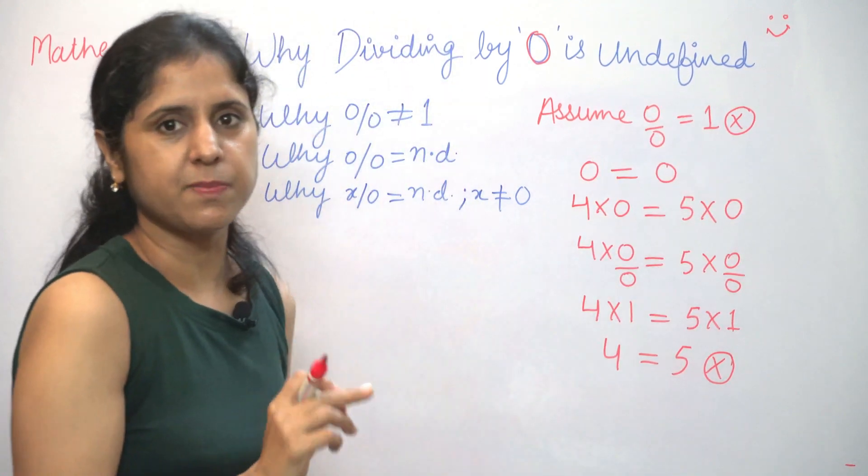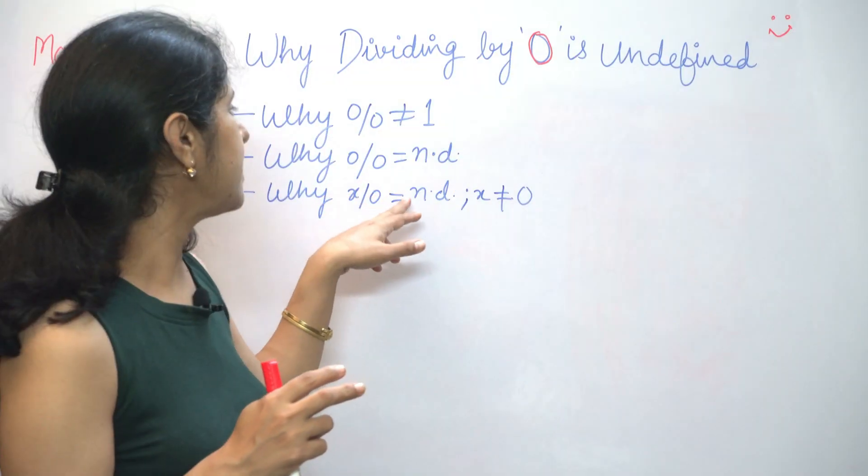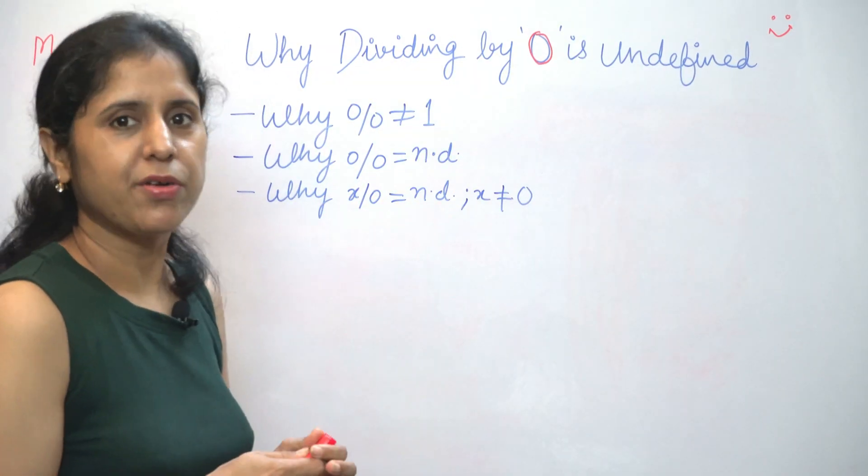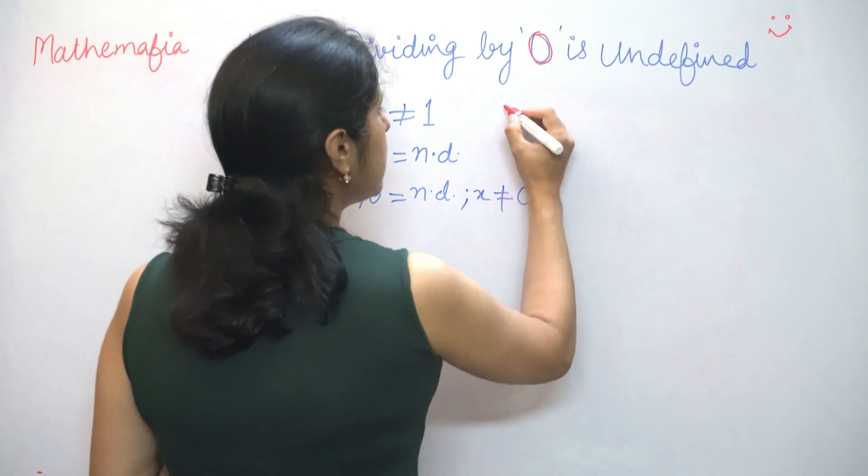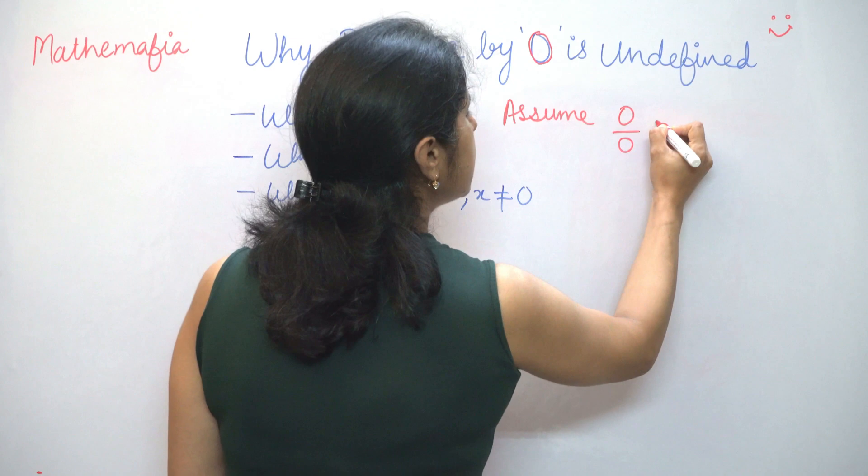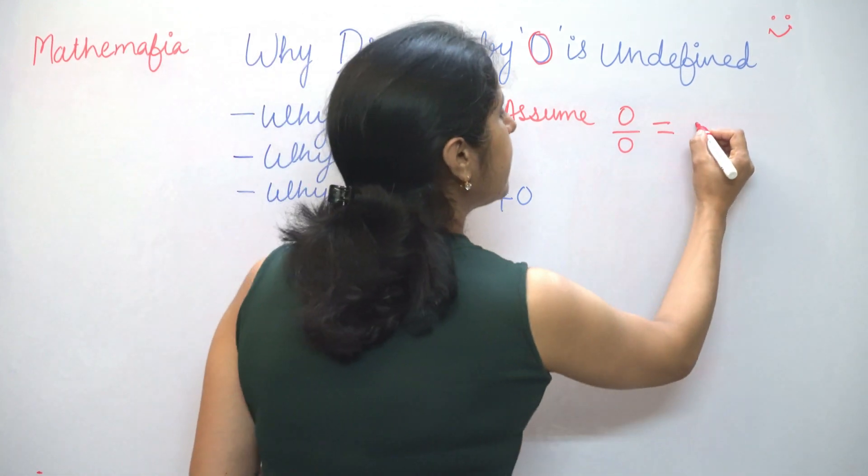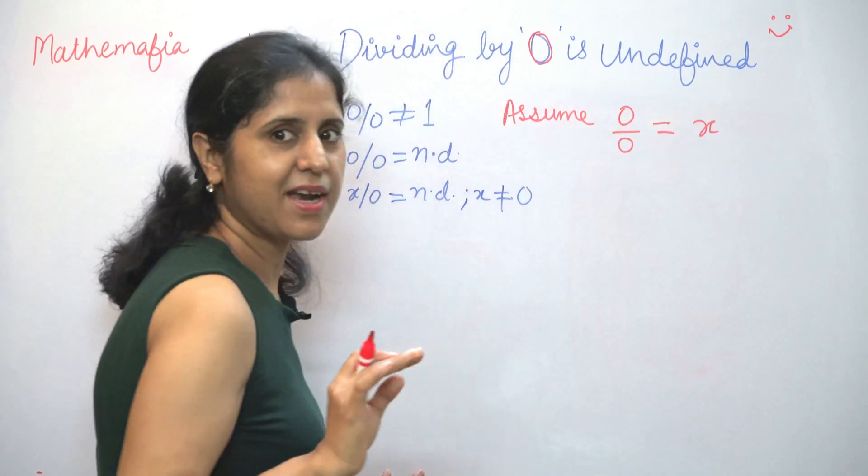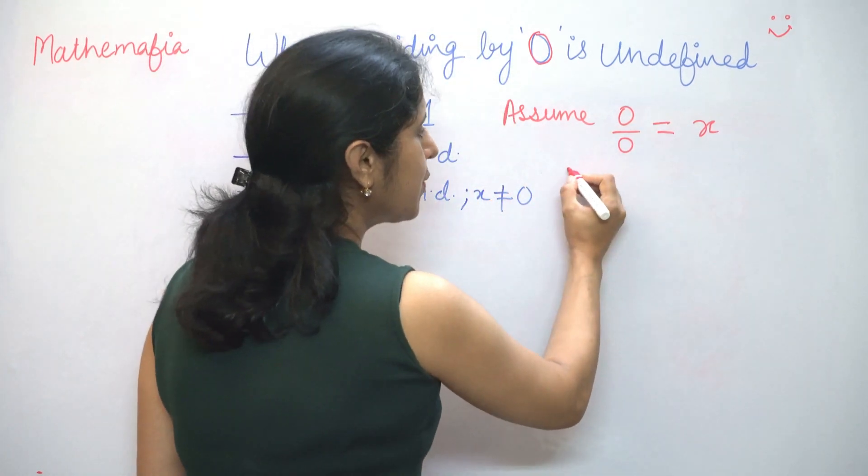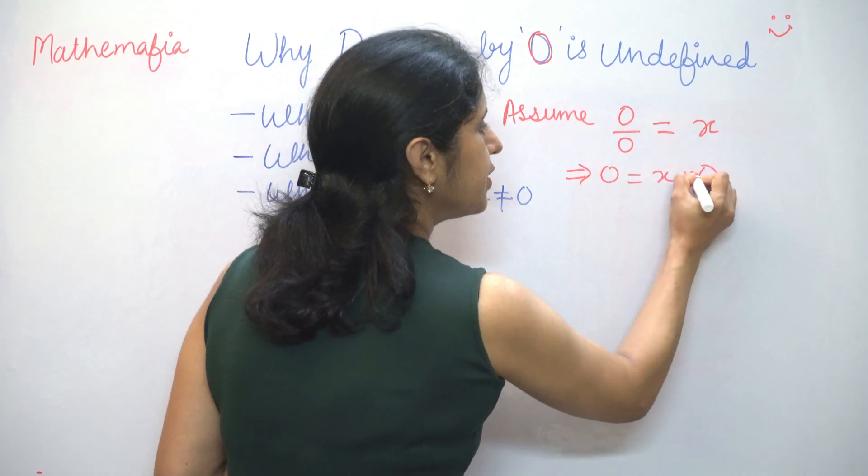So we have proved the first part here and we will move on to the second part. Why 0 by 0 is not defined? This also we will prove by contradiction. How do we prove that? First, we will assume that 0 by 0 is defined and it has a particular value, say x.